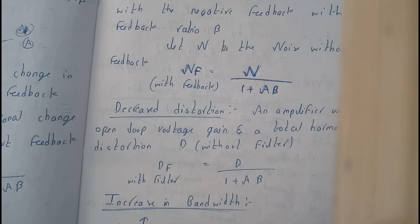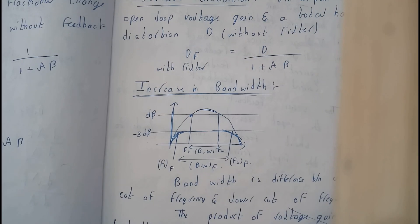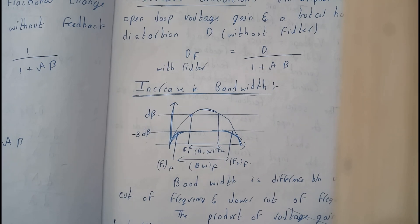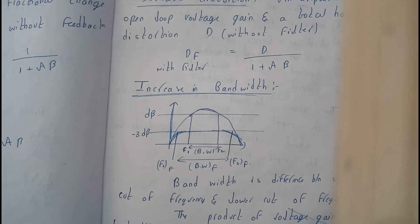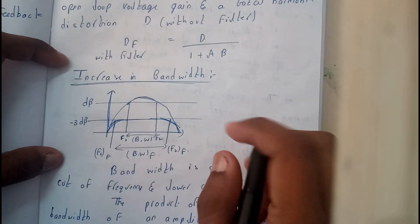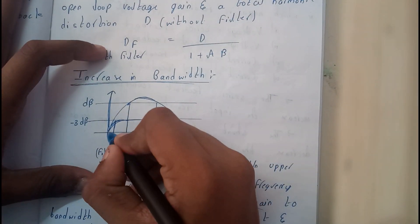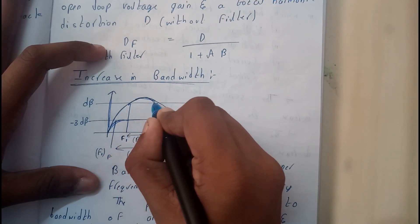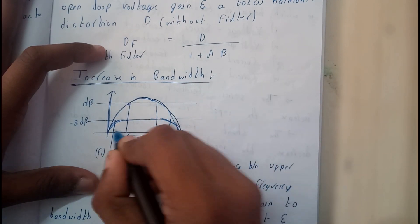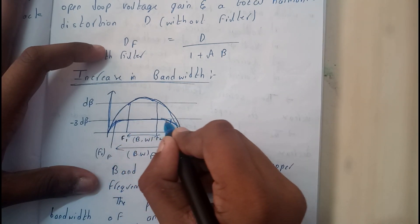Now let us go through the most important and expected 5-marks question: increase in bandwidth. This is asked as a proof question worth 5 marks — one of the most important topics. We will assume the larger bandwidth as 'with feedback' and the smaller bandwidth as 'without feedback'.